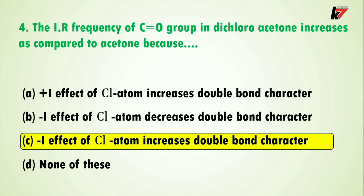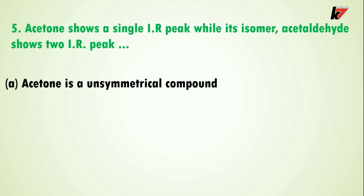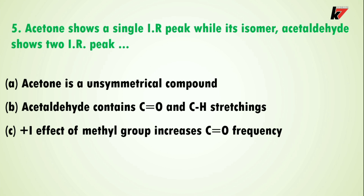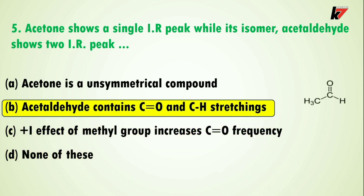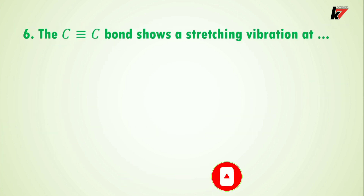Question 5: acetone shows a single IR peak while its isomer acetaldehyde shows two IR peaks. The correct answer is option B: acetaldehyde contains carbonyl and C-H stretchings. Here is the acetaldehyde structure — the carbonyl shows one IR peak and the aldehyde C-H stretching shows another, giving two peaks. Acetone is a symmetrical molecule and gives only one IR peak.